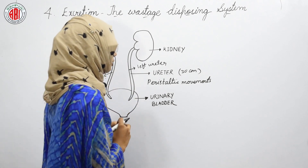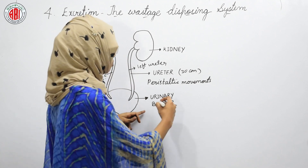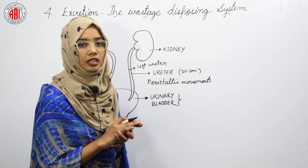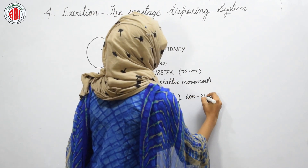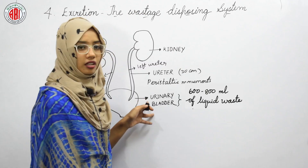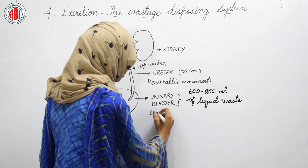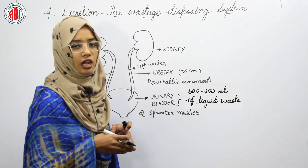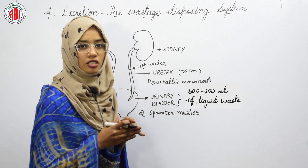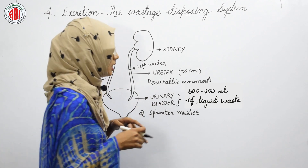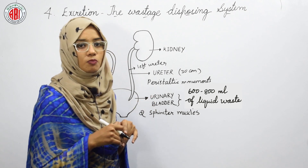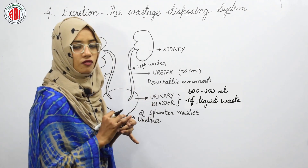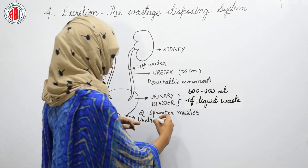After the urine reaches the urinary bladder, it passes out through the urethra. The urinary bladder is a pear-shaped organ that holds urine and can hold up to 600 to 800 ml of liquid waste. The urinary bladder has two sphincter muscles — one involuntary and one voluntary, which is under the control of our brain. By the contraction and relaxation of these muscles, excretion takes place. When the sphincter muscles relax, liquid waste passes out through the urethra.